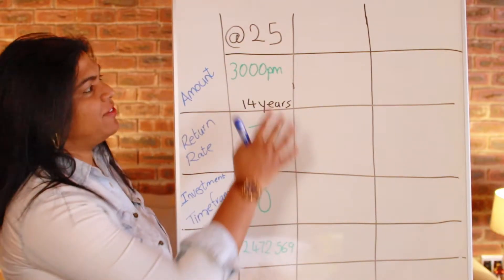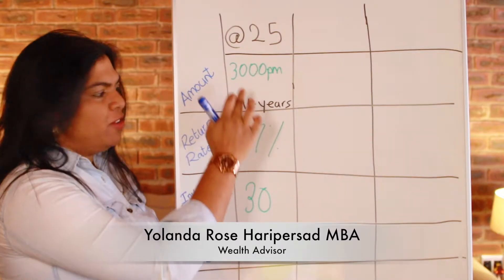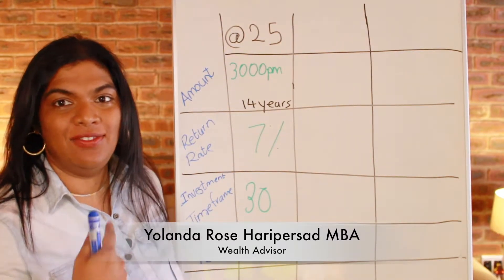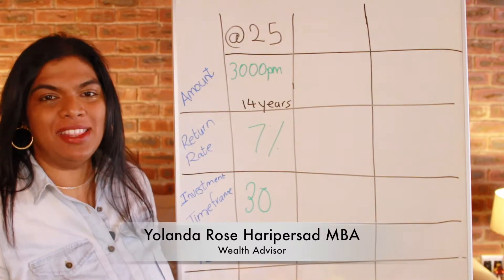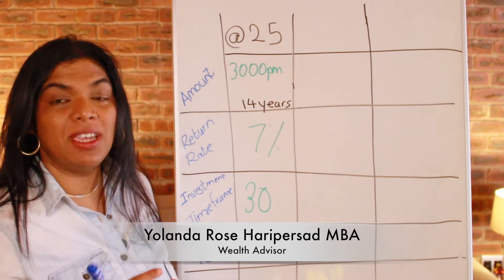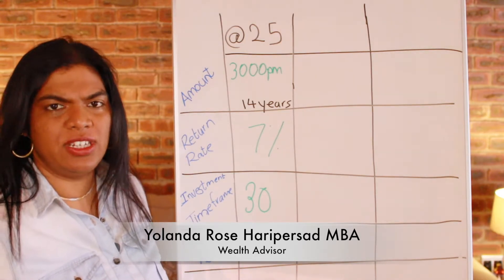So let's say you invest when you're 25. You invest R3,000 per month for a period of 14 years because in South Africa, you can invest a maximum of R3,000 a month in a tax-free investment. Tax-free investments are kept at R36,000 per year, R500,000 per lifetime, and it would take you just over 14 years to get there.